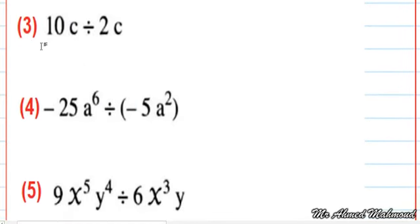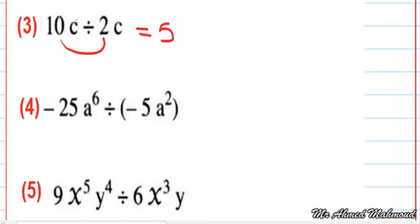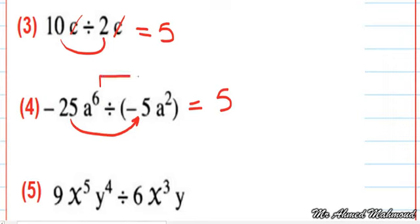Next: 10c divided by 2c. We divide 10 by 2 to get 5, and c over c cancels. The final answer is 5. For the next problem: negative 25 divided by negative 5 equals positive 5, and a power 6 minus a power 2 equals a to the power of 4.